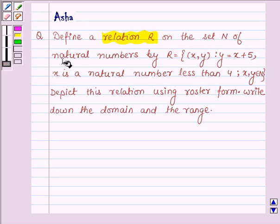on the set N of natural numbers by R is equal to the set of all ordered pairs X and Y such that Y is equal to X plus 5 and X is a natural number less than 4 where X and Y belong to the set of natural numbers. Depict this relation using roster form, write the domain and the range.